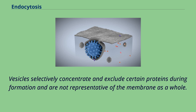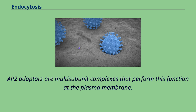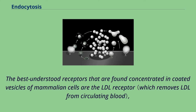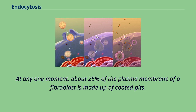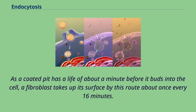Vesicles selectively concentrate and exclude certain proteins during formation and are not representative of the membrane as a whole. AP2 adapters are multi-subunit complexes that perform this function at the plasma membrane. The best understood receptors found concentrated in coated vesicles of mammalian cells are the LDL receptor, the transferrin receptor, and certain hormone receptors. At any one moment, about 25% of the plasma membrane of a fibroblast is made up of coated pits, and a fibroblast takes up its surface by this route about once every 16 minutes.